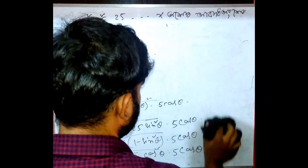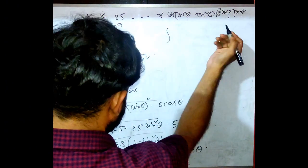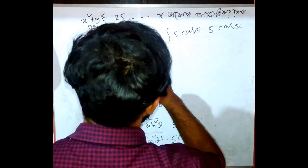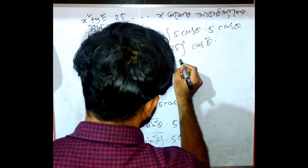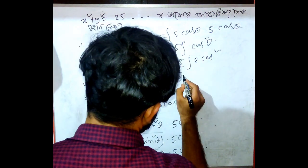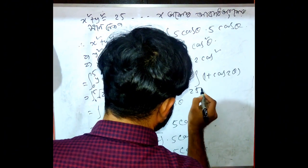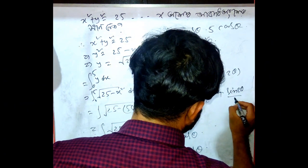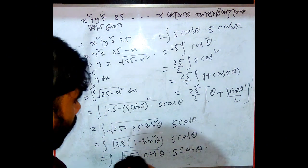I can keep on the integration. 5 cosine theta. The data. This variable. Integration cos square theta. 25 by 2. Cos square theta. 1 plus cos 2 theta. 25 by 2. Theta plus sine 2 theta divided 2. And that's about the problem. Our limitations.